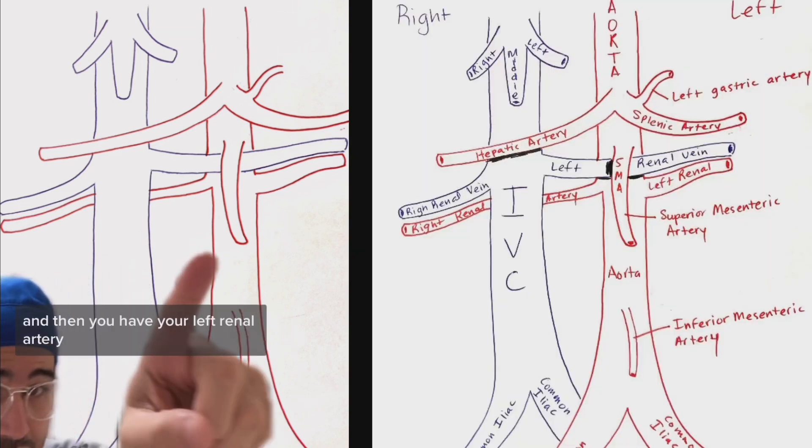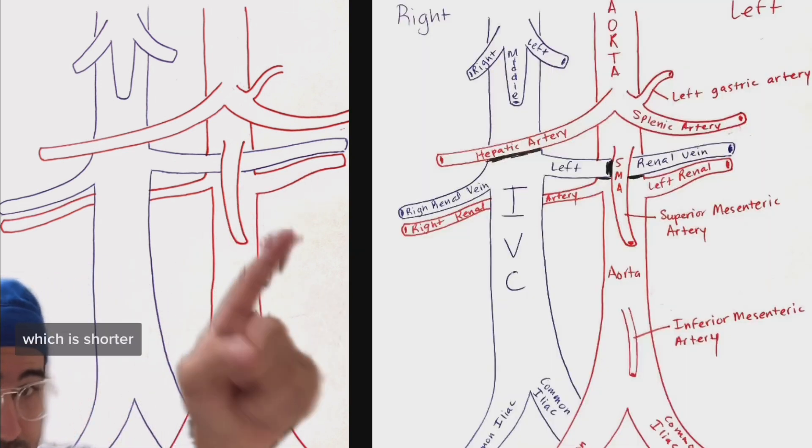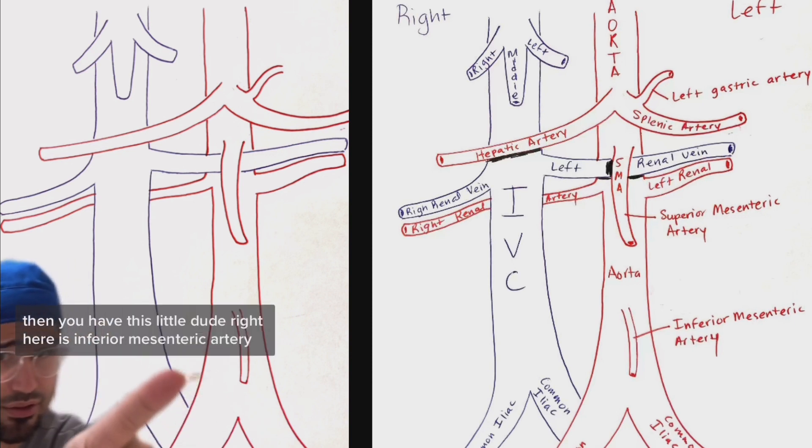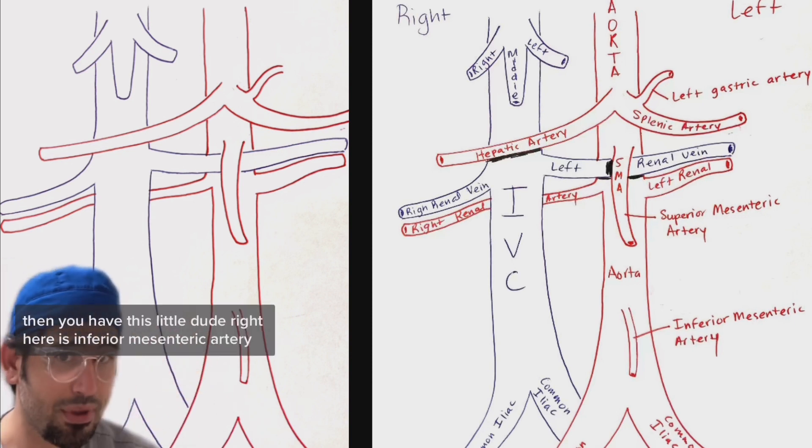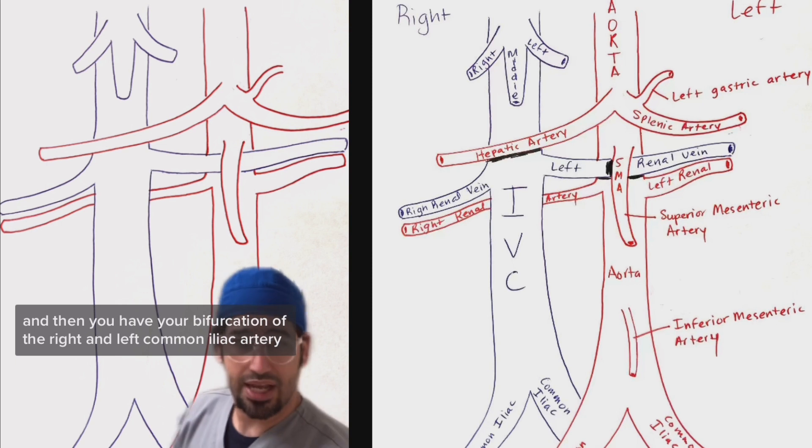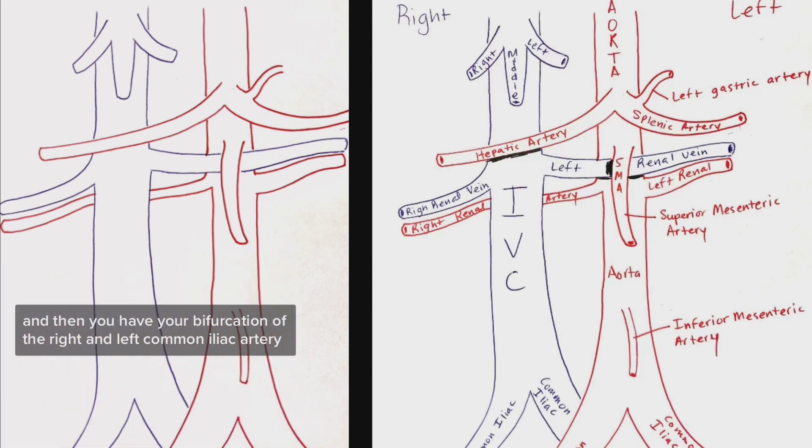And then you have your left renal artery which is shorter. Then you have this little dude right here, which is the inferior mesenteric artery. And then you have your bifurcation of the right and left common iliac artery.